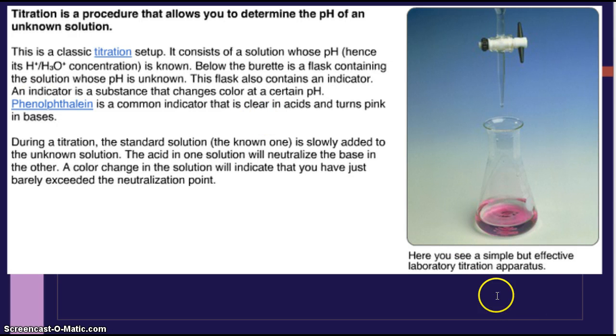Titration is a process that allows you to determine the pH of an unknown solution. So here you see a simple but effective laboratory titration apparatus. This is a classic titration setup. It consists of a solution whose pH, hence its H+, or hydrogen ion concentration, or hydronium H3O+, concentration, is known. Below the burette is a flask containing the solution whose pH is unknown. This flask also contains an indicator. An indicator is a substance that changes color at a certain pH. Phenolphthalein is a common indicator that is clear in acids and neutral, but it turns pink in bases.